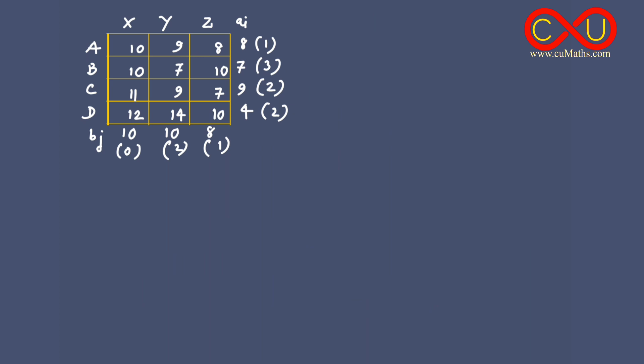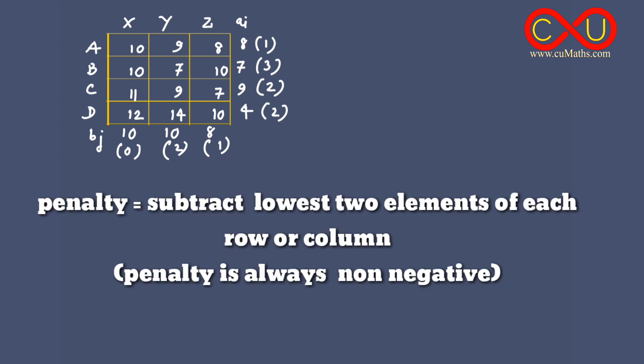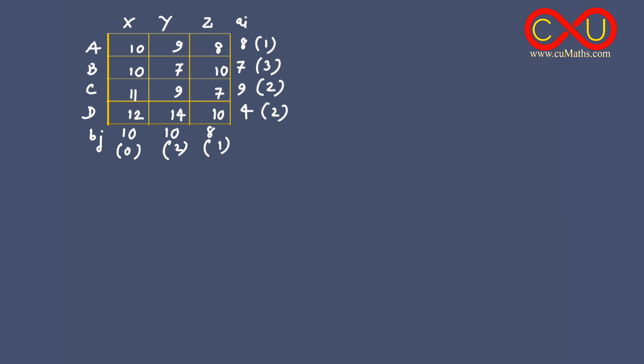We construct the table for VAM. First we calculate the penalty — penalty means finding the two lowest minimum elements of each row and each column. In the first row, nine and eight are the lowest, so the penalty is nine minus eight equals one. The second row penalty is ten minus seven equals three. The third row gives two. For columns: the first column gives zero (ten and ten), the second column gives two, and the third column gives one (eight minus seven).